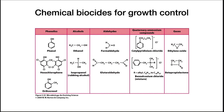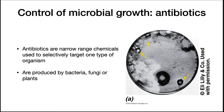Antibiotics are another method of chemical control. They are narrow-range chemicals used to selectively target one type of organism. They are produced by bacteria, fungi, or plants, with most medically relevant antibiotics coming from microorganisms. We'll have much more to say about them in the last module on public health. This ends our lectures on the nutrition, growth, and control of bacteria.